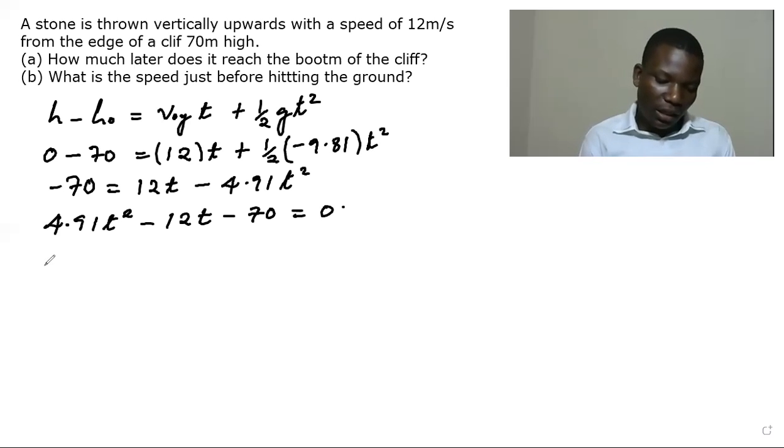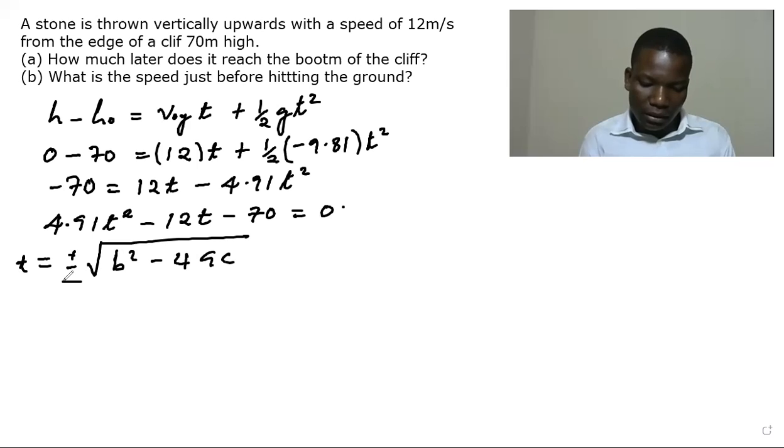So we can say time is equal to negative b plus or minus the square root of b squared minus 4ac divided by 2a. So we have negative b plus or minus the root of that. So here we have, on this equation, we have our a, our b, and our c.